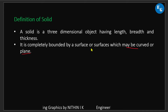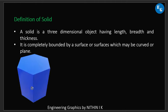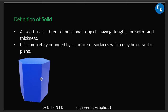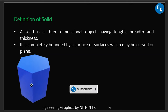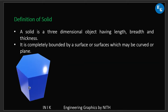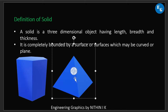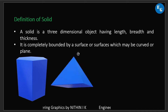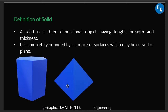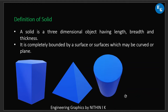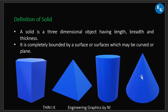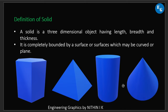A plane surface bounds a solid. For example, a hexagonal prism has plane surfaces — hexagonal plane surfaces on its faces. A square pyramid also has plane surface faces. A cylinder is bounded by a curved surface — it is bound by curved surfaces. This is the definition of solid.